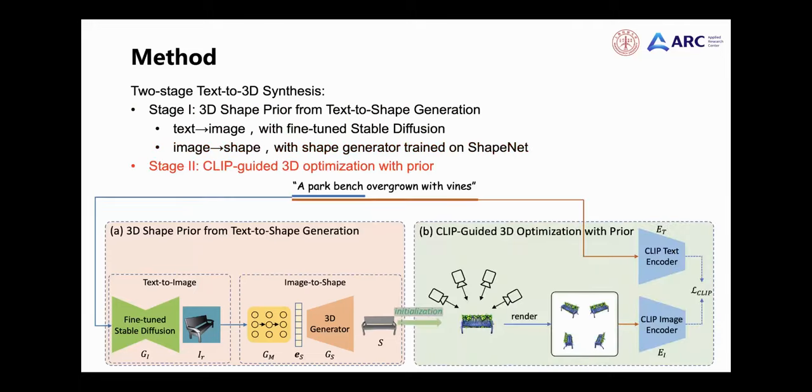Then in the second stage, we use the 3D shape prior obtained in the previous stage to initialize the neural radiance field and optimize the CLIP similarity between the multi-view rendered images with complete text prompts to obtain our desired 3D content.